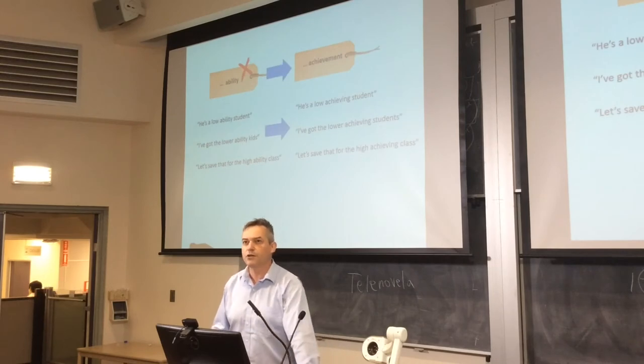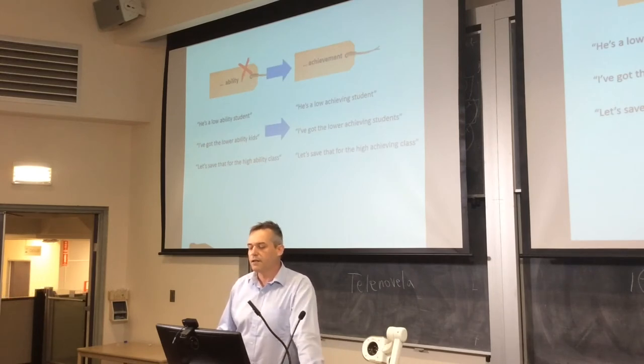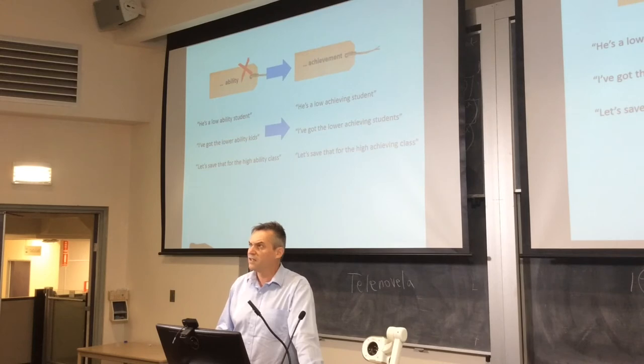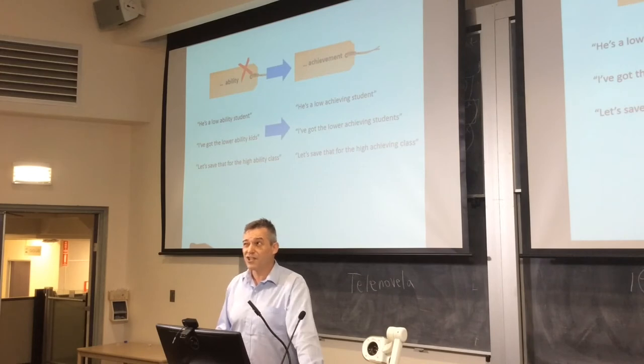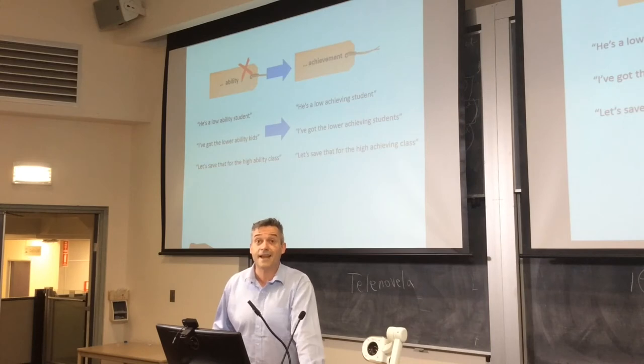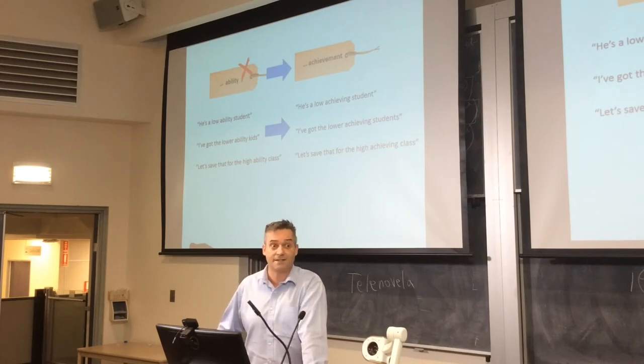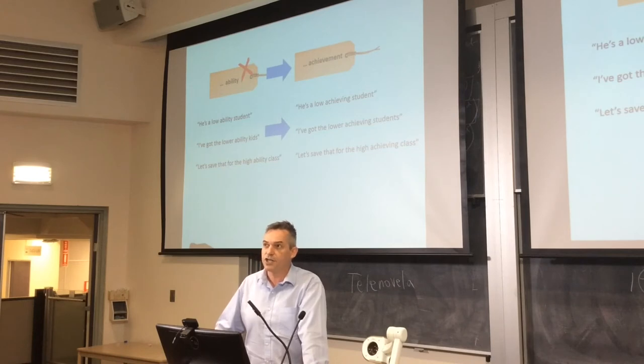So what happens when we change the words? He's a low-ability student becomes he's a low-achieving student. I've got the low-ability kids becomes I've actually got the low-achieving kids. This is my favorite: you'll hear this in the faculty all the time, let's save that activity for the high-ability class. If you change those words to let's save that for the high-achieving class, you'll suddenly listen to yourself and wonder what you're doing.